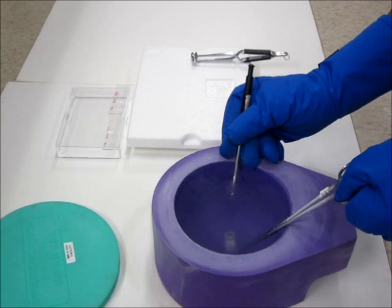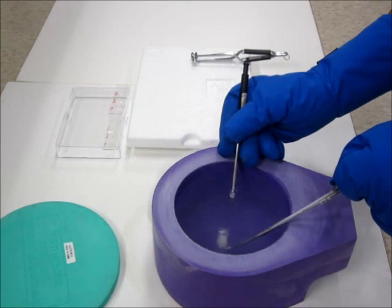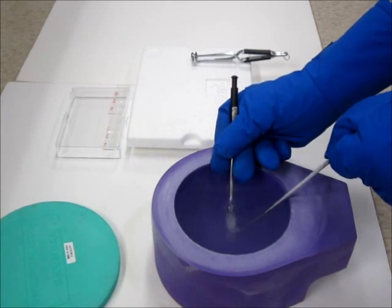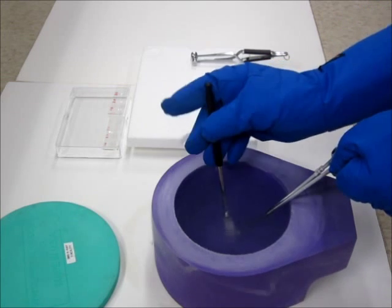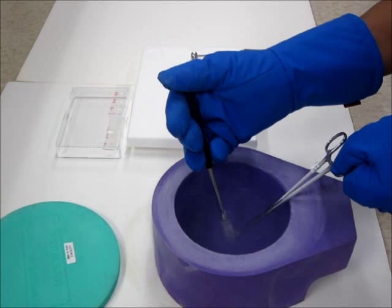Now I am aligning the cryo vial so that the loop can be placed inside using the crystal wand. I am using the crystal cap pusher to place it inside.